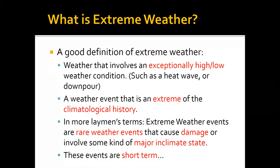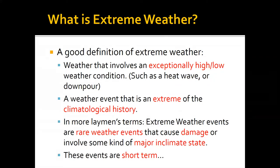What is extreme weather? We can define it as one of a few things: an extremely high or low weather condition — like a temperature of 120 degrees outside, or 15 degrees, both extreme for us in the Bay Area — or an event that's an extreme of climatological history, going outside of the norm, like four inches of rain in the middle of July.